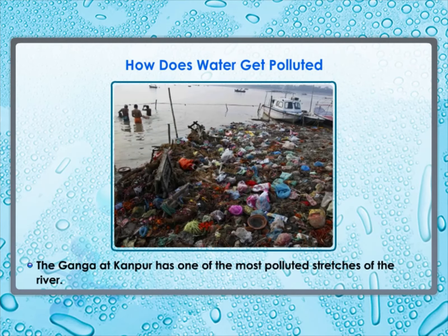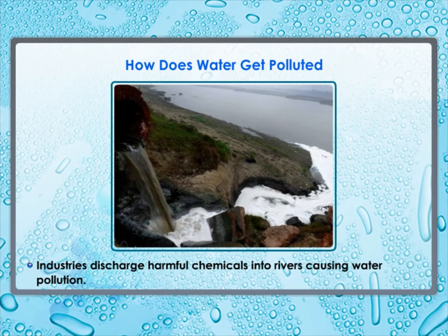The Ganga at Kanpur in Uttar Pradesh has one of the most polluted stretches of the river. Kanpur is one of the most populated towns in UP. People can be seen bathing, washing clothes, and defecating in the river, and also throw garbage, flowers, idols of gods and goddesses, and non-biodegradable polythene bags into it. Kanpur has more than 5,000 industries including fertilizer, detergent, leather, and paint industries, which discharge toxic chemical waste into the river. Many industries such as oil refineries, paper factories, textile and sugar mills, and chemical factories discharge harmful chemicals into rivers and streams, causing chemical contamination of water.